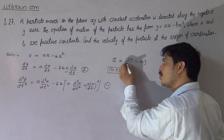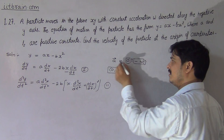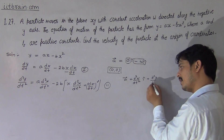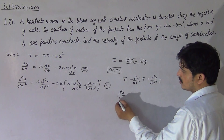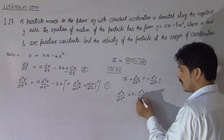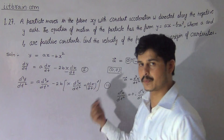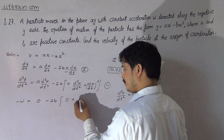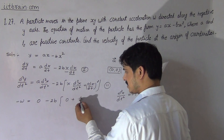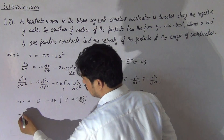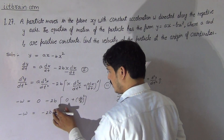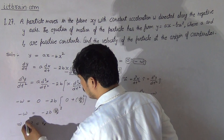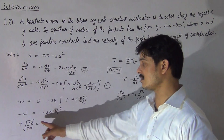The acceleration vector in standard form is (d²x/dt²)î + (d²y/dt²)ĵ. Comparing with 0î - ωĵ, we get d²x/dt² = 0 and d²y/dt² = -ω. Substituting these into the second equation and evaluating at the origin (x = 0): -ω = 0 - 2b·(vx)². Therefore -ω = -2b·vx², which gives vx = √(ω/2b).